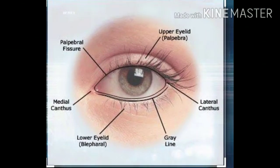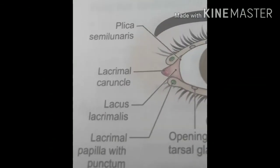The space between the two eyelids is the palpebral fissure. The two lids are fused with each other to form the medial and lateral canthus. At the medial or inner canthus there is a small triangular space called the lacus lacrimalis. Within it there is an elevated reddish body called the lacrimal caruncle.